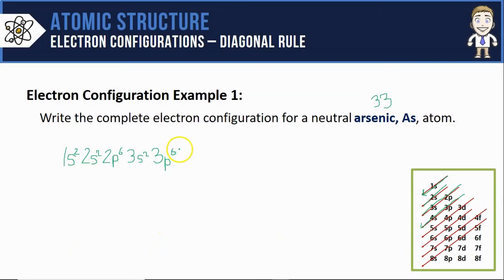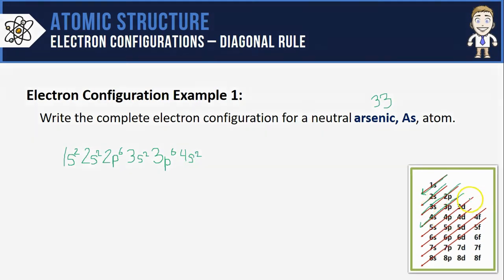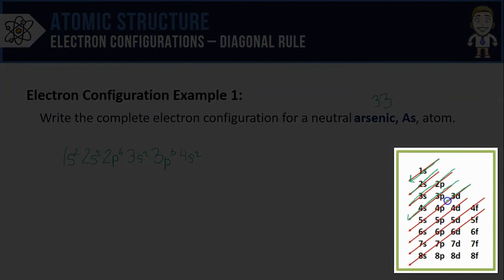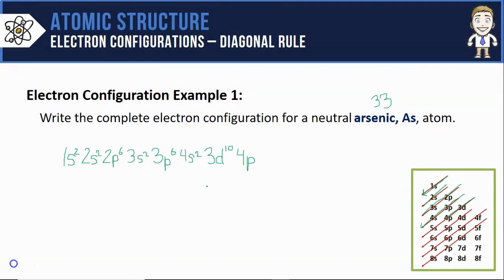After those 4s orbitals, we'll fill the 3d's, followed by the 4p's. So here's my 3d, which holds 10 electrons. My 4p's—now remember, we also only have to get up to 33 electrons. So far I have 2, 4, 10, 12, 18, 20, 30.